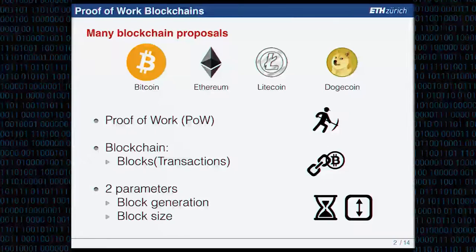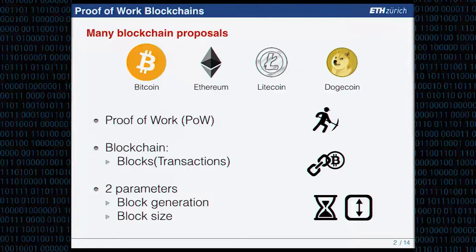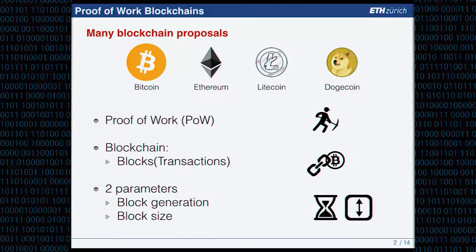Basically solve this puzzle in order to create blocks. A block is cryptographically linked to its previous block, effectively forming a blockchain. Every block can accommodate a certain number of transactions within the block, those transactions that have been exchanged on the underlying peer-to-peer network of the blockchain.